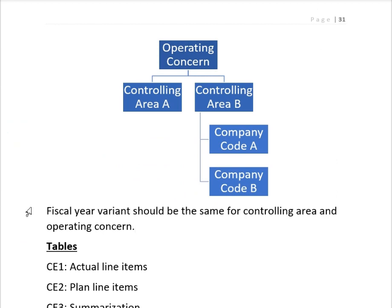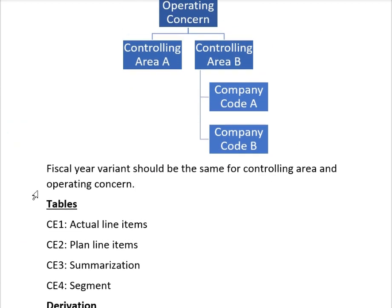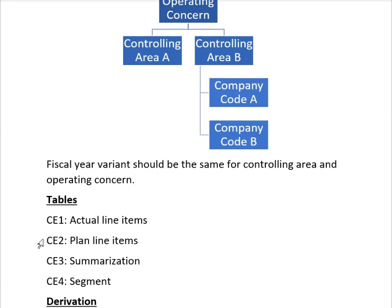The fiscal year variant must be the same for the controlling area and the operating concern. When assigning a controlling area to the operating concern, the fiscal year variant must match. Four tables are used in operating concern Profitability Analysis, and when we create the operating concern, the system automatically generates these four tables: CE1 stores actual line items, CE2 stores plan line items, CE3 stores summarization data, and CE4 stores segment storage data.